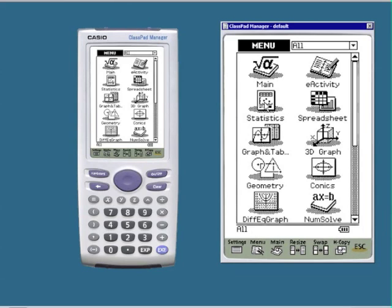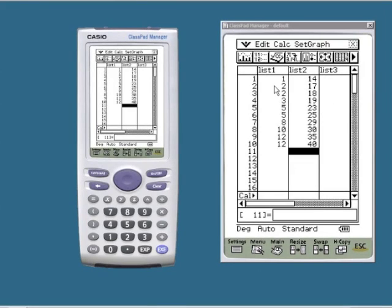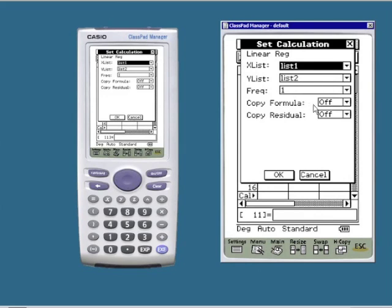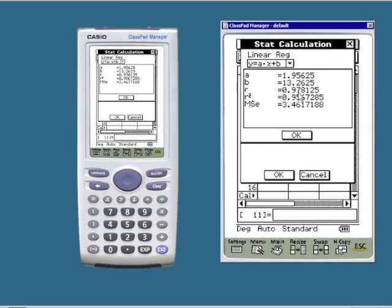I'm going to enter the marks for test A in list 1 on my ClassPad and test B results in list 2. Back into the statistics app, edit, clear all, and then we can enter the data. To calculate the correlation coefficient, it's calc, linear regression, list 1, list 2, copy formula to Y1, OK. And our r value is 0.978 to three decimal places,